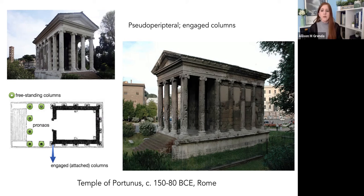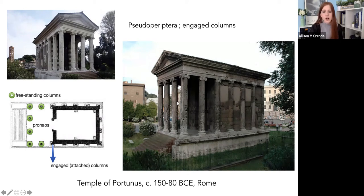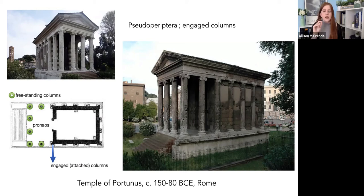The first thing to point out are columns along the sides and even in the back, as you can see on the plan. But this does not make it a peripteral temple. In Greek temples the columns go all the way around, but here the columns are engaged — they are touching and attached to the wall, not freestanding. The fact that we have some type of column going all the way around, but they are not all freestanding, makes this a pseudo-peripteral temple. This is a purely Roman design — it takes the peripteral idea from Greek but doesn't put freestanding columns all the way around.